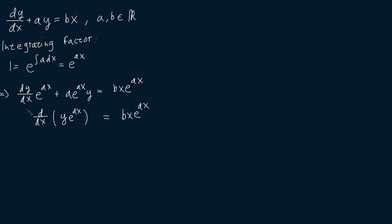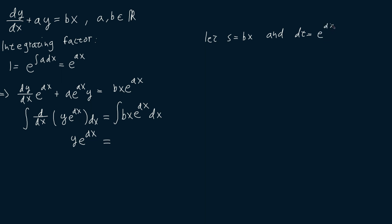Then let's integrate both sides of this equation with respect to x. On the left-hand side we'll be left with just y times e to the ax, according to the fundamental theorem of calculus. To integrate the right-hand side we're going to use integration by parts. Let s be equal to bx and dt be equal to e to the ax dx, so that ds will be b times dx, and t will be equal to 1 over a times e to the ax, since the integral of e to the ax is 1 over a e to the ax.